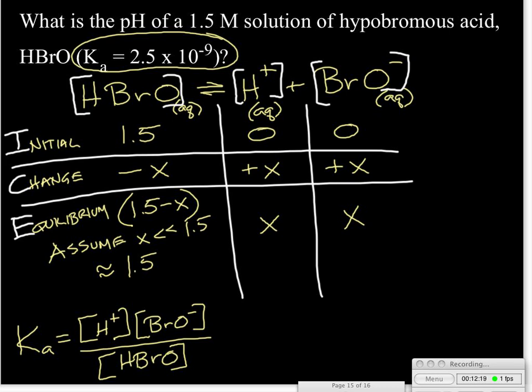And at this point, what we can do is go down here to our expression for Ka, and we can say the Ka we know is equal to 2.5 times 10 to the minus ninth. That is going to equal X times X, because those are our concentrations of the hydrogen ion and the hypobromite ion. And we're going to divide that by 1.5. And that's basically saying that's equal to X squared over 1.5.